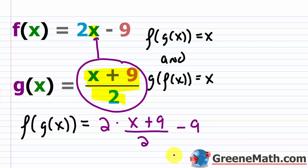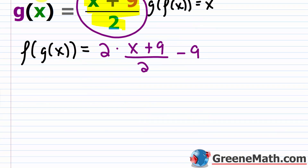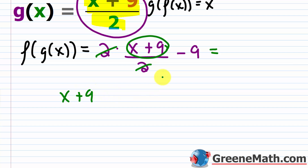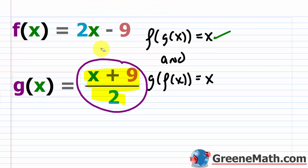So what does this give me? We know that 2 over 2 is 1, so that cancels. And we basically have the numerator x plus 9, and then minus 9, and this equals what? 9 minus 9 is 0, so this is just x. So in the first case, it's true — we have f of g of x is x. So let me put a check mark here.